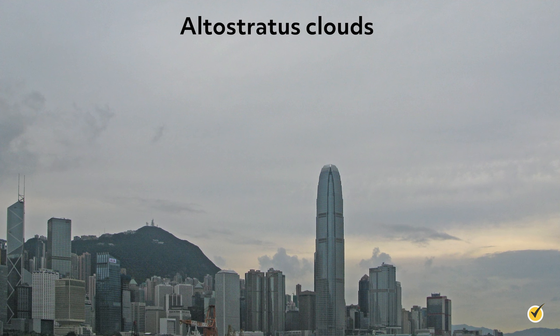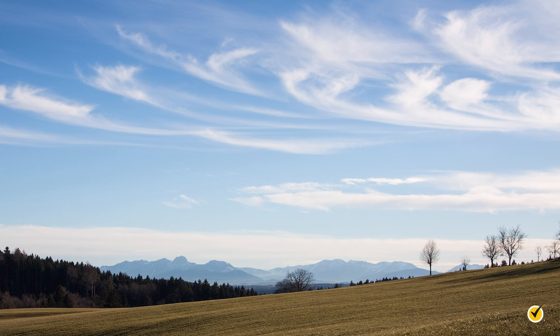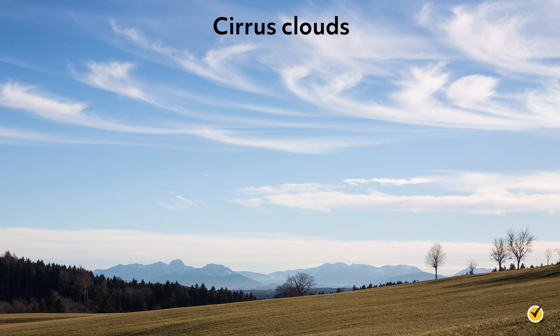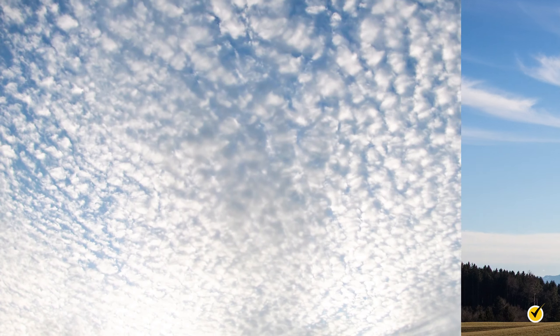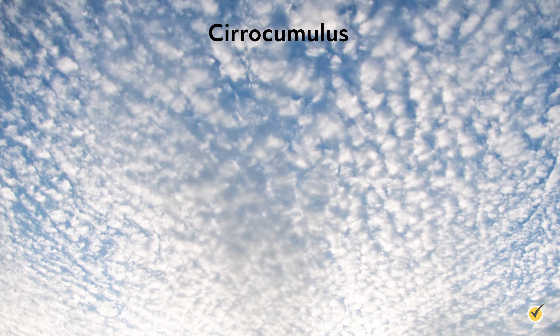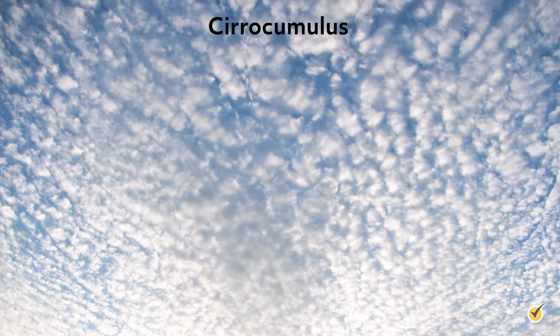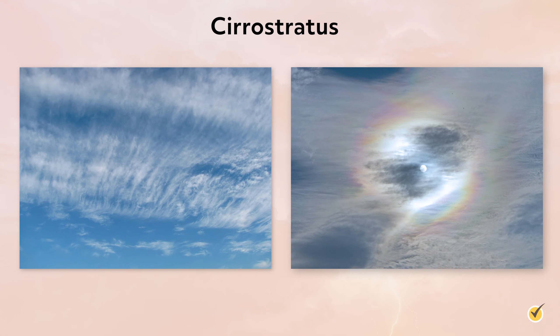Now on to high-level clouds. These are easy to remember due to the common prefix cirrus. Cirrus clouds are thin, wispy clouds blown into long trails by the winds in the upper atmosphere. Clouds that resemble the cumulus types we've discussed, but found at much higher altitudes, are called cirrocumulus. Lastly, as far as regular cloud types go, we have cirrostratus. This type of cloud has a distinguishing feature: notice the ring around the sun, which is caused by sunlight refracting through ice crystals in the cloud — a dead giveaway that you're looking at a cirrostratus cloud.